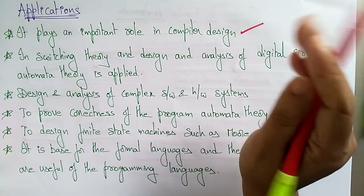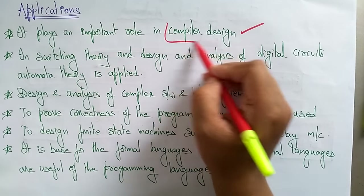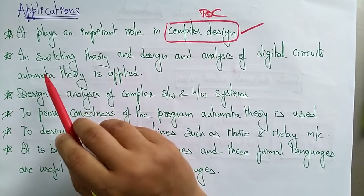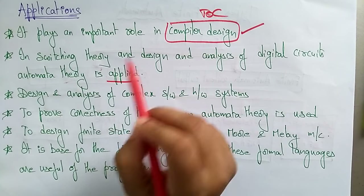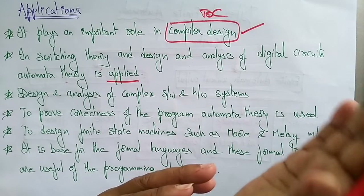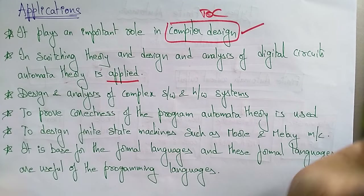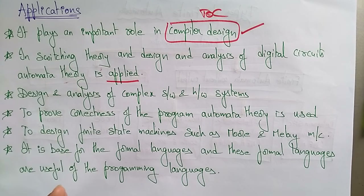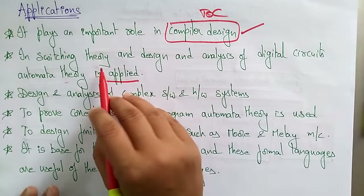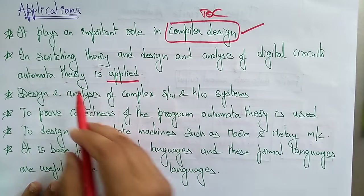Compiler design is one of the important roles it plays. In switching theory, and in the design and analysis of digital circuits, automata theory is applied. You may wonder where we use symbols, transition diagrams, transition states, and functions — it is very important to learn this subject because it plays an important role in compiler design, switching theory, and design and analysis of digital circuits.